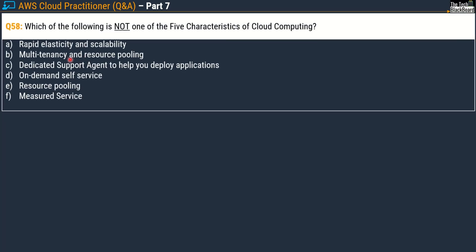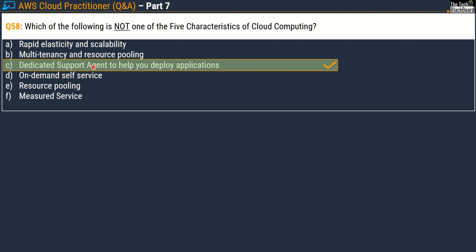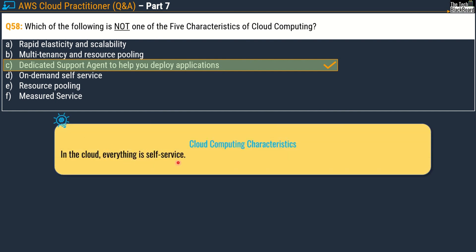Question 58 asks: which of the following is not one of the five characteristics of cloud computing? Options are: rapid elasticity and scalability; multi-tenancy and resource pooling; dedicated support agent to help you deploy applications; on-demand self-service and resource pooling; and measured service. The correct answer is option C — dedicated support agent — because in cloud computing everything is self-service; you do not wait for a support agent to deploy applications.